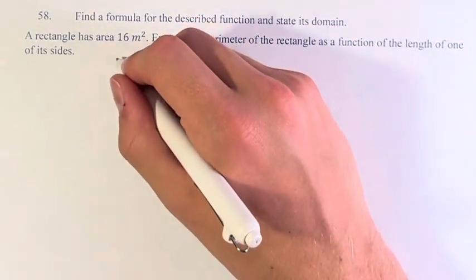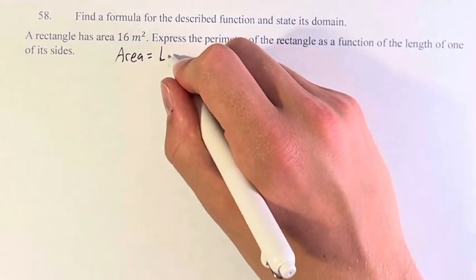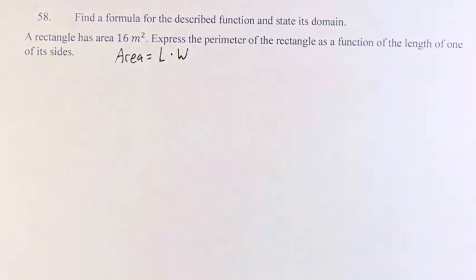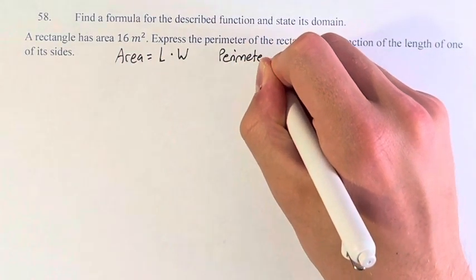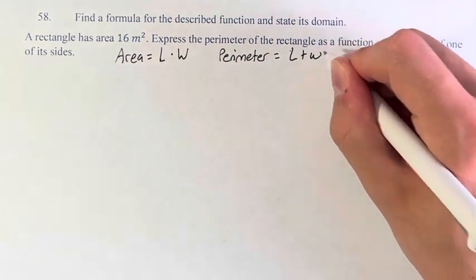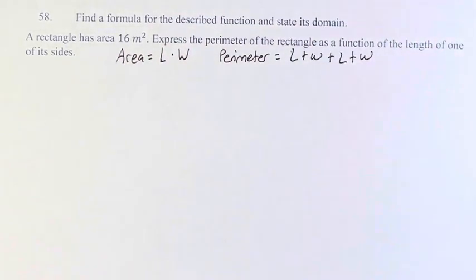So, the area of a rectangle can be written as the length times the width. The perimeter is equal to the length plus the width plus the length plus the width again, the sum of all the sides.